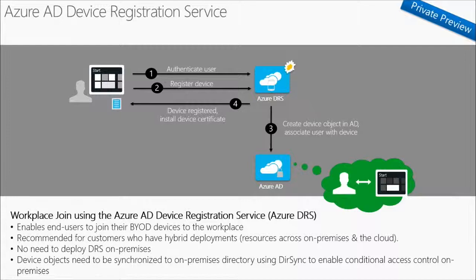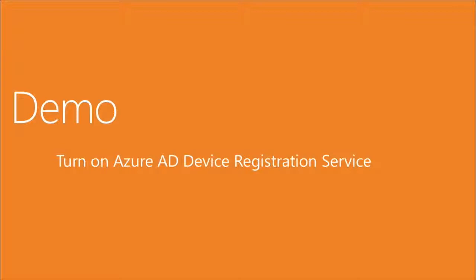This device registration is useful for internal resources, but what about the cloud? Currently in private preview, we have the Azure Active Directory Device Registration Service, which allows businesses — including those with no local directory — to host device registration entirely in the cloud. Device information is stored in Azure Active Directory and can be used for multi-factor authentication similarly to the on-premises approach. Simon will now show us how to turn on this device registration service in Azure Active Directory.